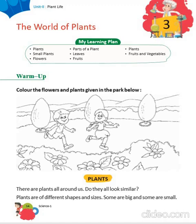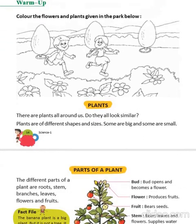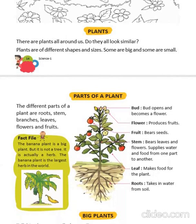Let's come to the third chapter — the World of Plants. In this chapter we will learn about plants: parts of a plant, small plants, leaves, fruits and vegetables, flowers and fruits. In this figure, you have to color the flowers and plants given in the park.